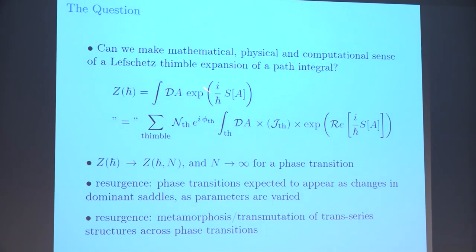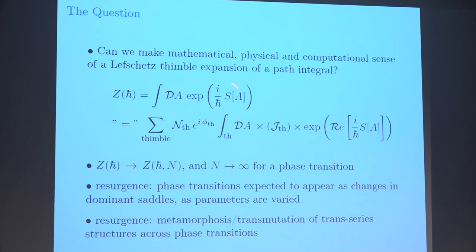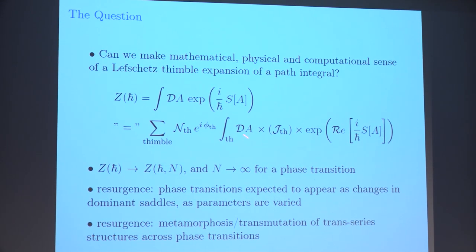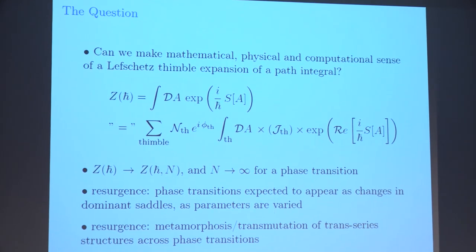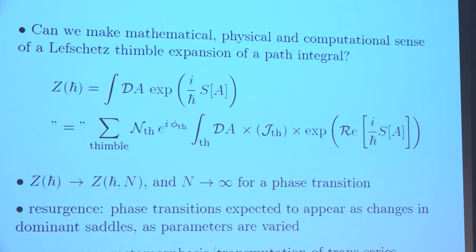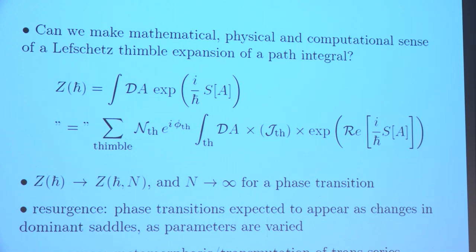Can we make mathematical, physical, and computational sense of an expansion of a formal path integral into a sum over saddles or thimbles? A thimble is an infinite-dimensional version of a steepest descent contour — on a thimble, the imaginary part of the exponent is constant, bringing out a phase. What remains, up to some Jacobian, is a well-defined integral calculable by Monte Carlo or other semi-classical techniques. If you could understand how to do this decomposition even approximately, this would give a new way to do calculations that we currently don't know how to do.